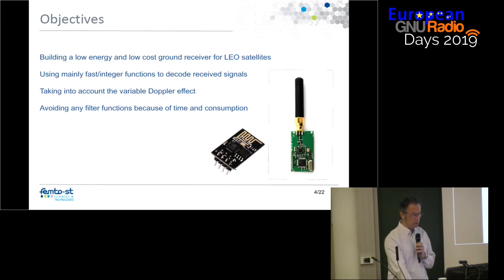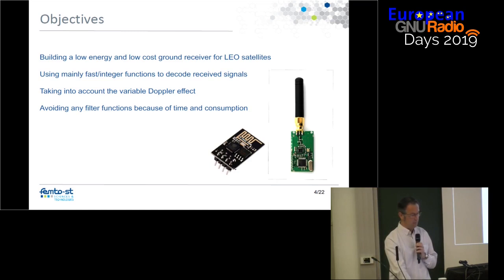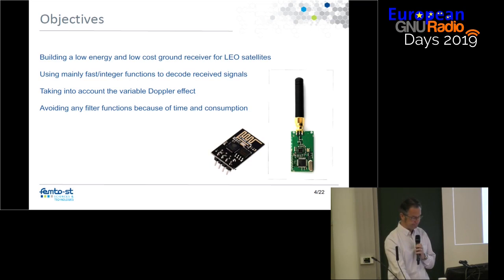What are our objectives for this ground receiver? We want to build a low-energy and low-cost ground receiver for LEO satellites. We want to use fast functions, mainly integer functions, to decode the received signals. We need to take into account the Doppler effect, and we are going to avoid using filter functions in order to save energy and time.